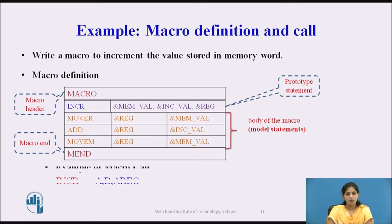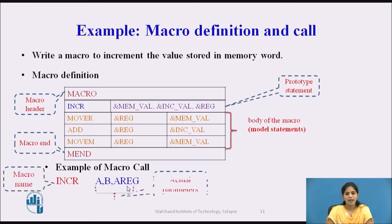To call this macro, we specify the name of the macro — INCR — followed by the actual parameter specifications: A, B, and AREG. Here, MEMVAL has the value A, INCVAL has the value B, and REGISTER has the value AREG.